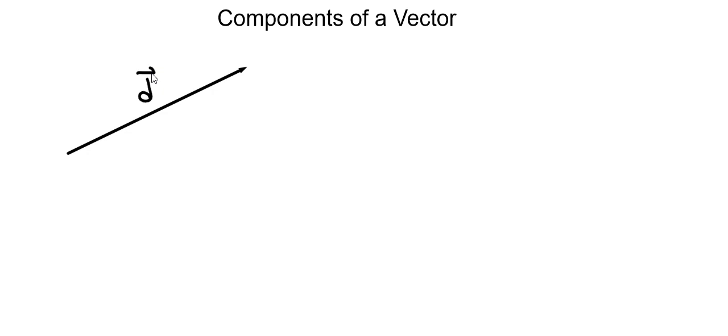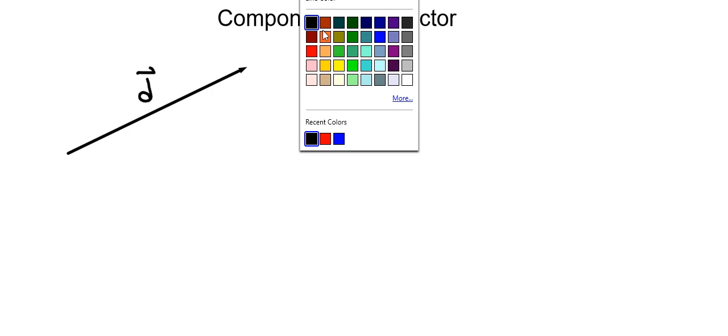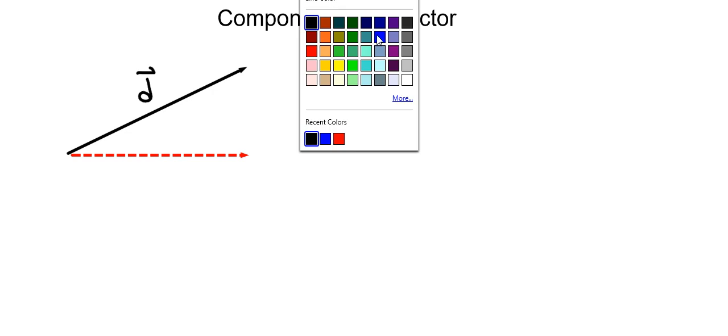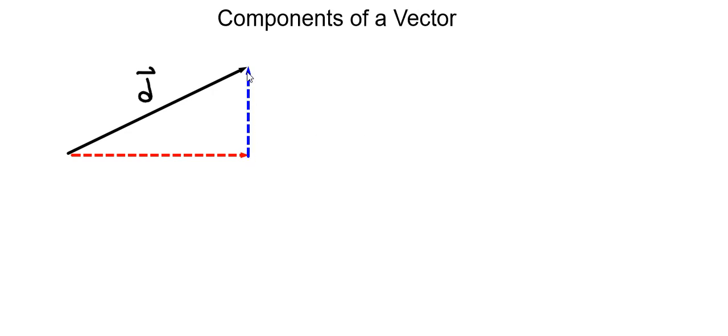Now this vector looks like it runs to the right and up. So let's look at what these components would look like on the page. We would have one component that carries you over to the right, as this vector does. And we would also have another component that carries you up on the page. By adding these two components together, we'll get the overall vector D.